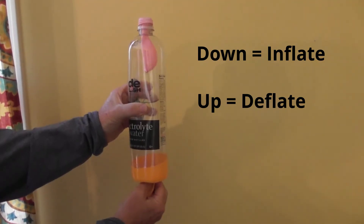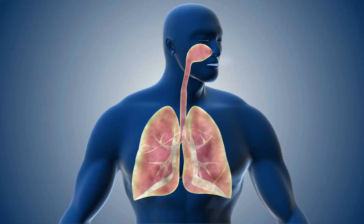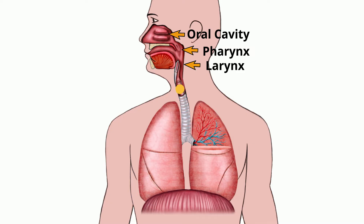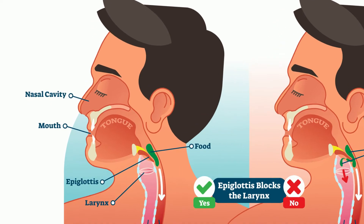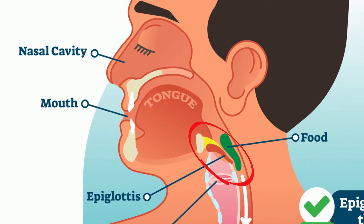As your lungs inflate, oxygen, along with other gases, travel in through your mouth and nose, past the pharynx and the larynx, which is also called the voice box, and down the trachea. The epiglottis covers your trachea and helps keep food and other objects out of your trachea.